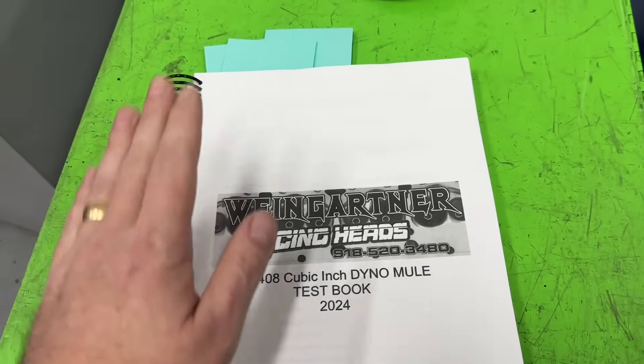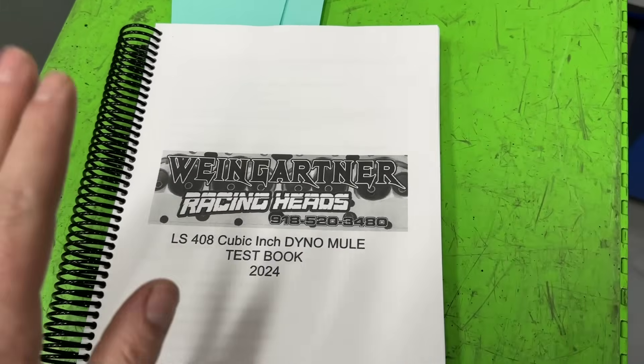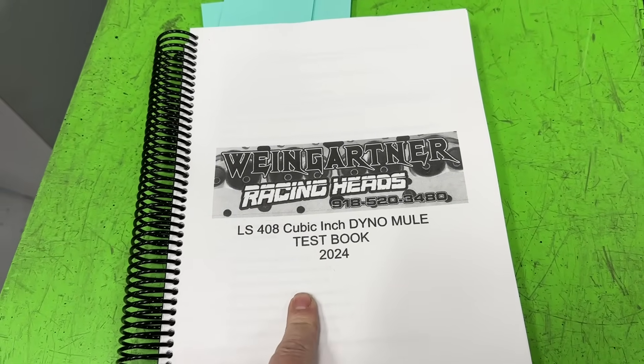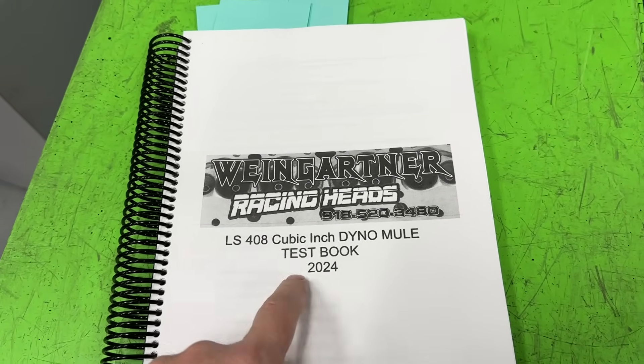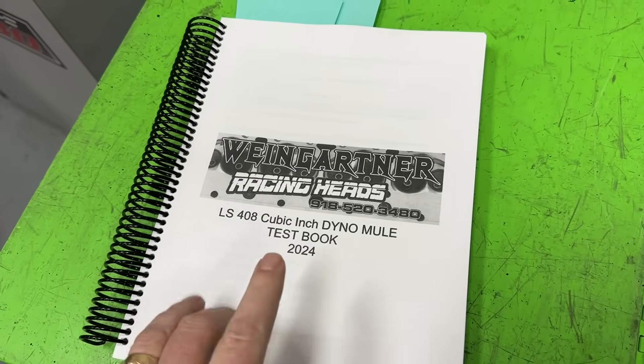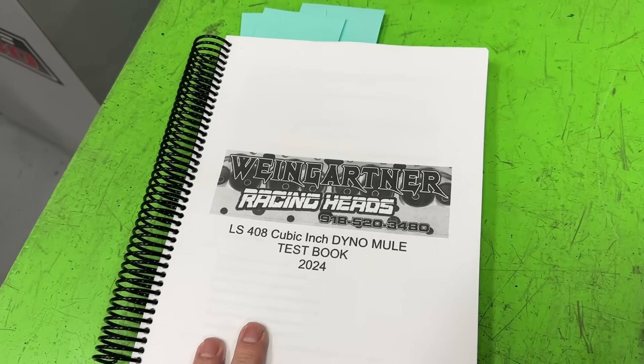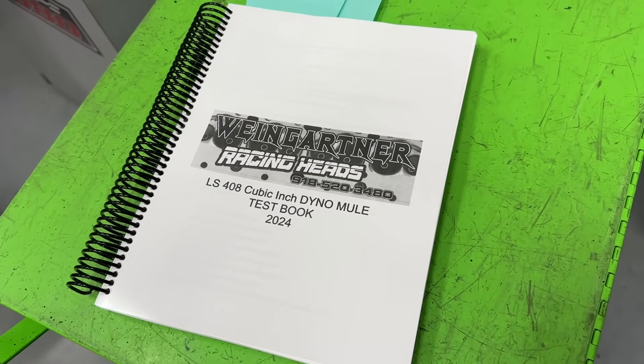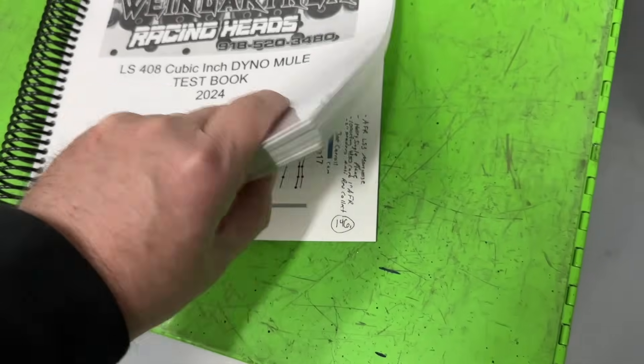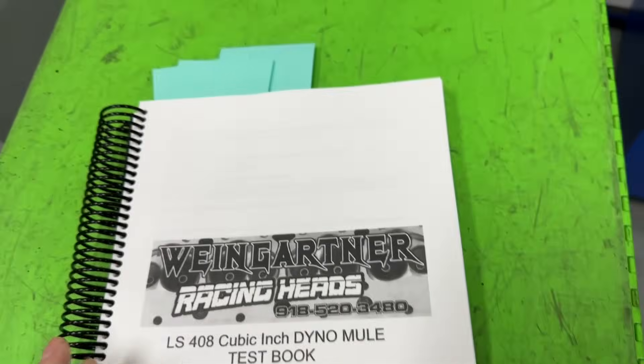Now we're going to get ready to show the dyno results and all of them are in this book right here. There's only one available and I'll put a link in the description, but you could purchase this hardcover book. But like I said, there's only one available right now that's left. I am selling the digital version too. And this is all of the LS testing that was done this year. And you could tell this book is thick.